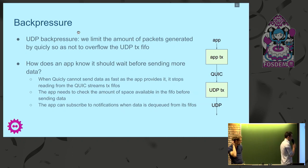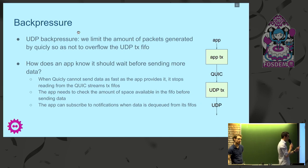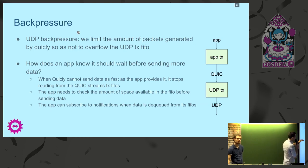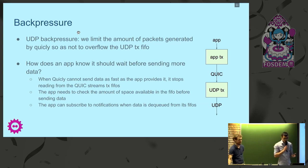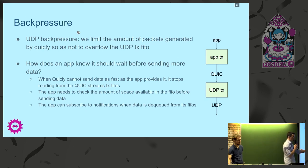From the application side, back pressure comes from the FIFOs — quicly will stop taking data from the stream FIFOs, and applications need to check the space available in the FIFOs. They will see they don't have space left to send data and will naturally stop sending. Another question is when applications can know that quicly has sent more packets and space is available again — there is a host stack feature to trigger notifications to an application when space becomes available in one of its FIFOs.